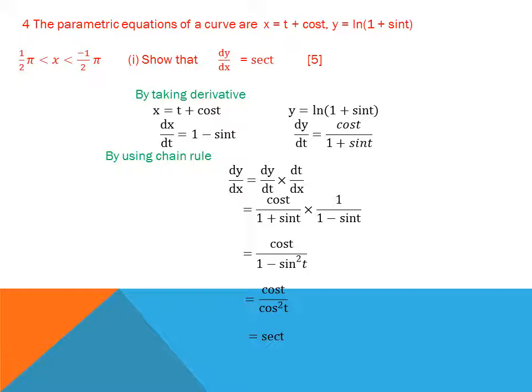On the other side, dy/dt = 1/(1 + sin t) · cos t, using the chain rule on ln(1 + sin t). By the chain rule, dy/dx = (dy/dt)·(dt/dx) = [cos t/(1 + sin t)] · [1/(1 − sin t)] = cos t/(1 − sin²t). Using the identity 1 − sin²t = cos²t, this becomes cos t/cos²t = 1/cos t = sec t.